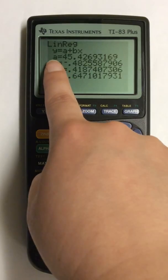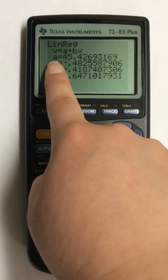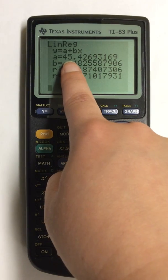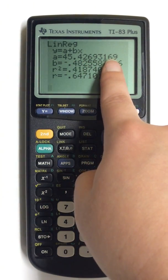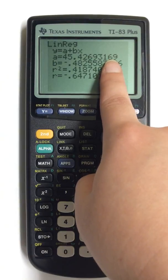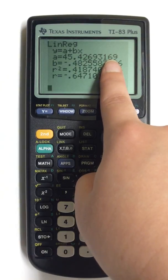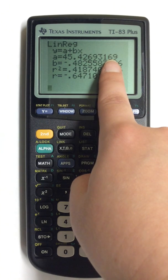the Y intercept is labeled as A: 45.2693169. Many times your instructors will ask you to round them, so just check for that information.